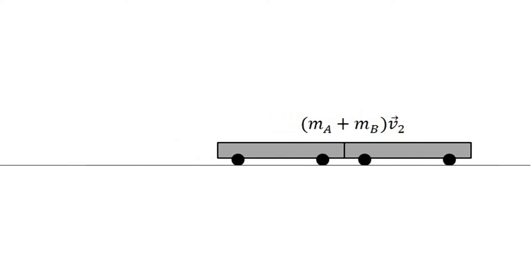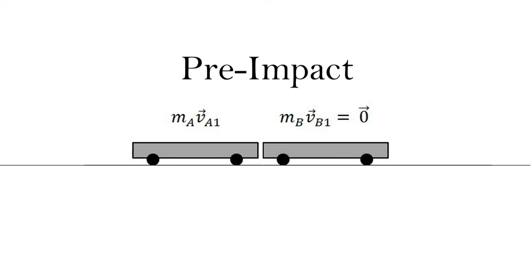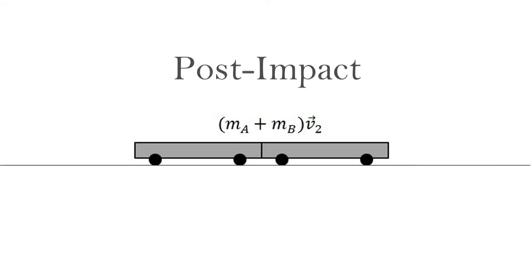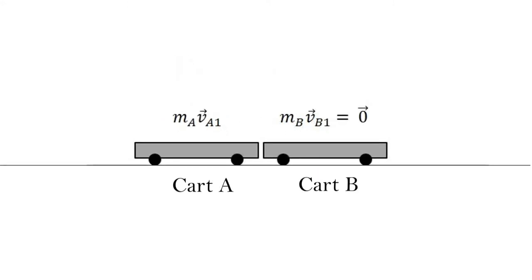To understand the collision we will break our system into two times, one pre-impact and two post-impact. Prior to impact, our momentum is given to us entirely by cart A as it begins with an initial velocity, here VA1, while cart B begins at rest.